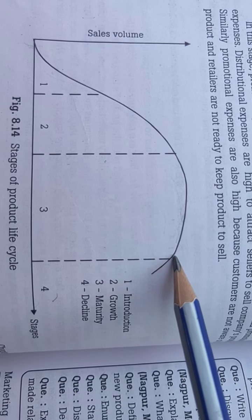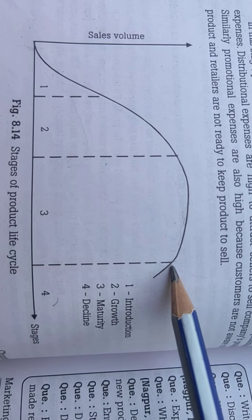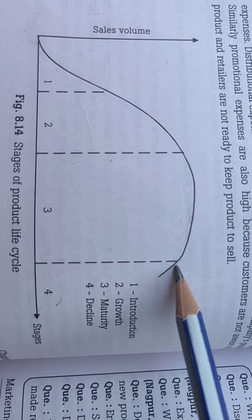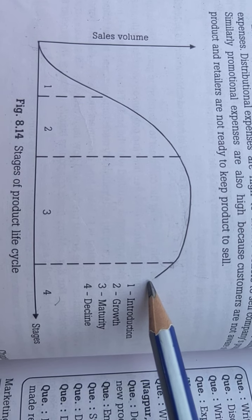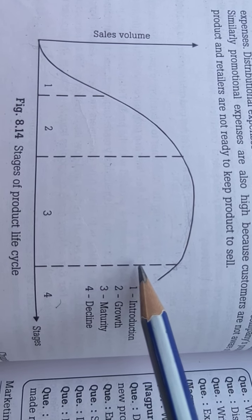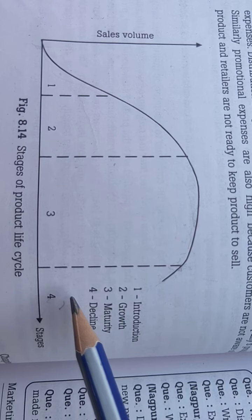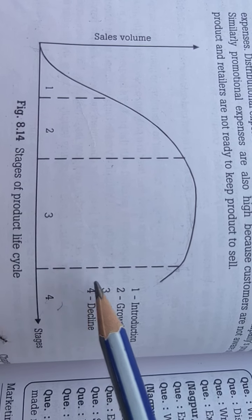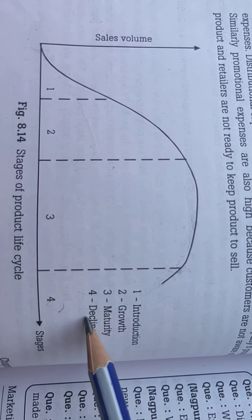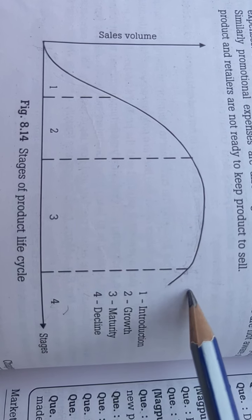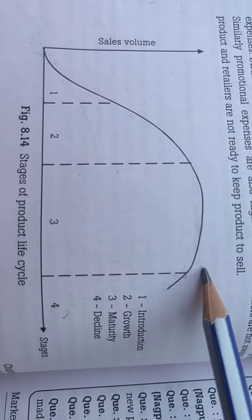After maturity, some change or makeover takes place in the product, or there is big competition from other products, or the needs and habits of customers change. Because of all these factors, the decline stage comes. In the decline stage, the sales volume starts to decrease. This is the fourth stage — for example, black and white televisions went through this decline stage, and today no one purchases them.